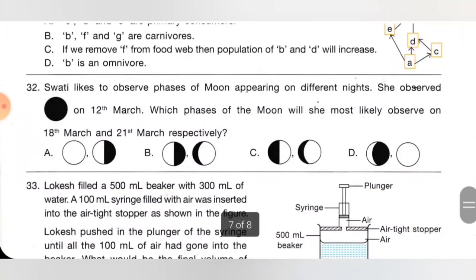Question 32: Swati likes to observe the phases of the moon appearing on different nights. She observed no moon or new moon on 12th March. Which phases of the moon will she most likely observe on 18th March and 21st March respectively? Option C is the correct answer — she will see a half moon on 18th March and a crescent moon on 21st March.